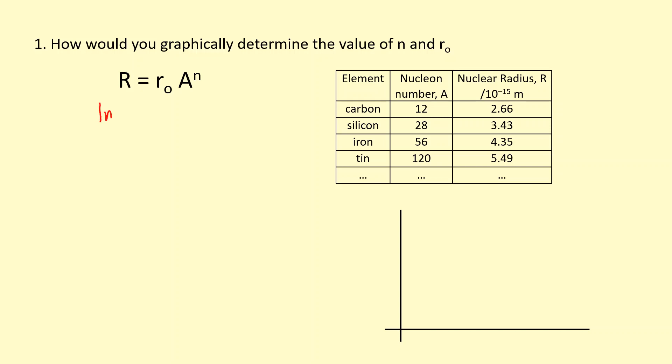The first step is to take the logs on both sides. Then I'm going to use the log rules that you learned in maths to separate this. Then I'm going to use another log rule to bring the N down to the front as a coefficient.